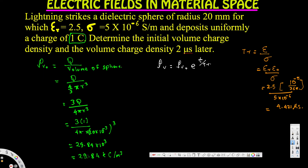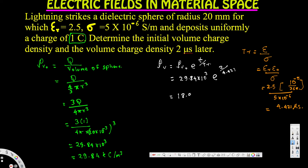Now we have rho_v0, t_r, and t available, so we can plug everything into the equation. Rho_v0 is 29.84 times 10 to the power of 3. The microsecond units cancel, so t over t_r becomes 2 divided by 4.421. After calculating, we get 18.98 times 10 to the power of 3.